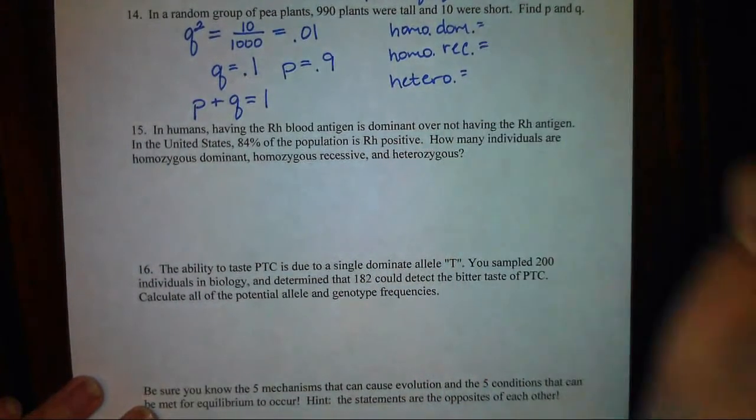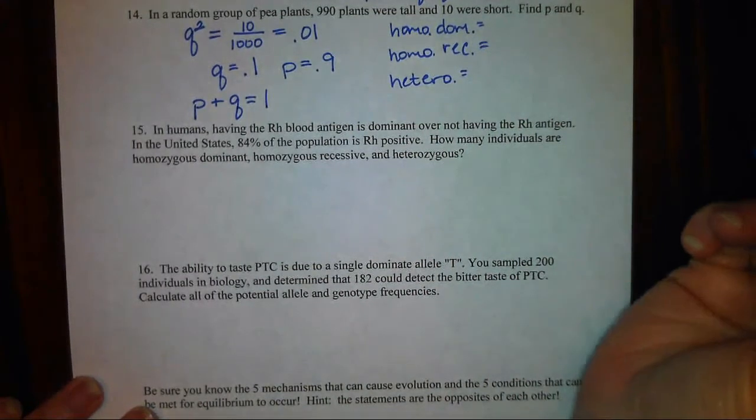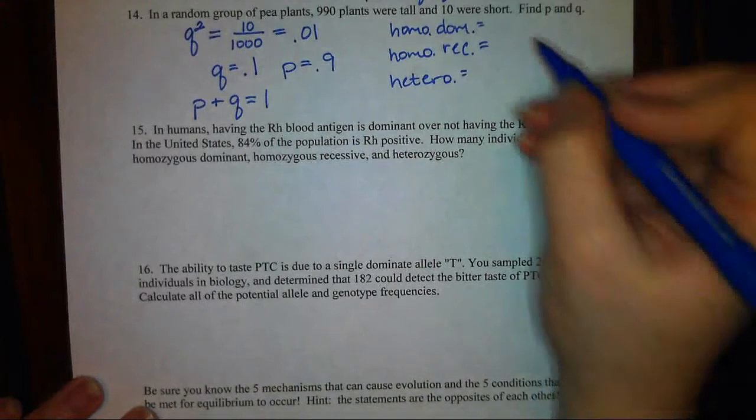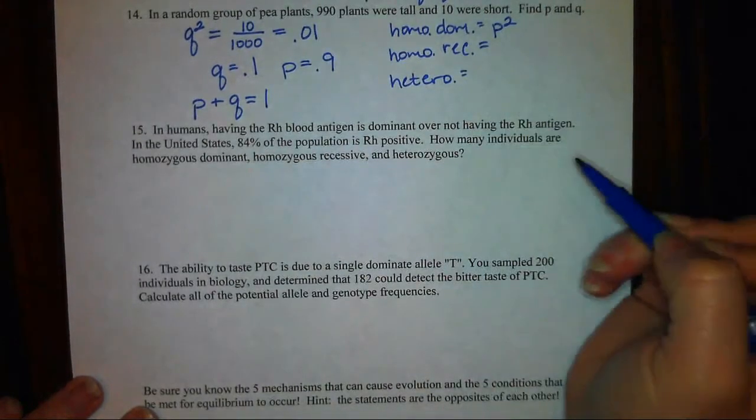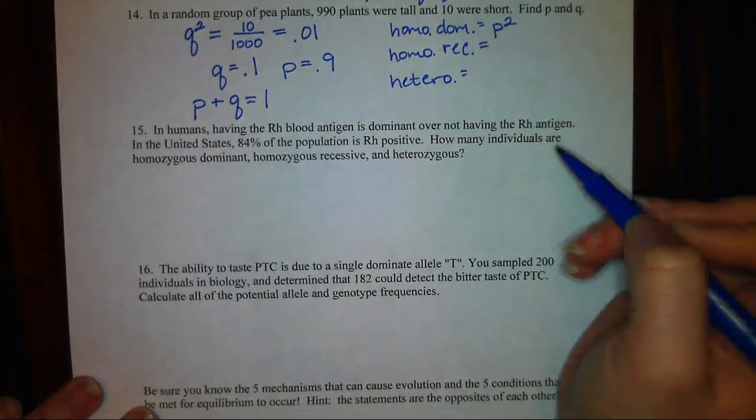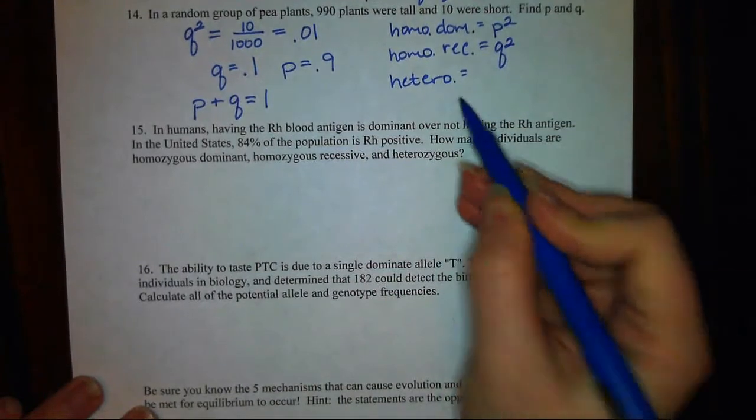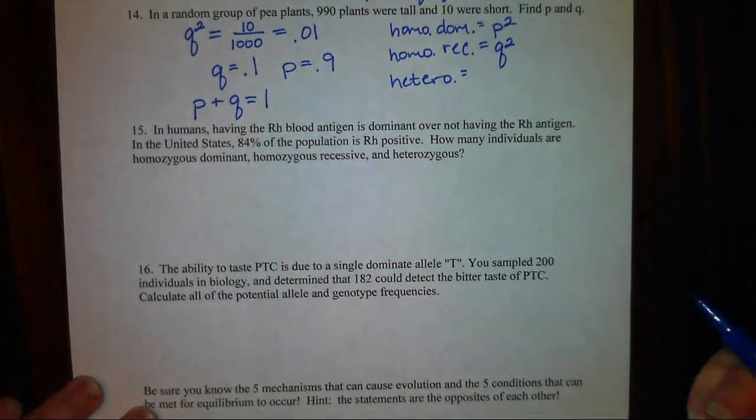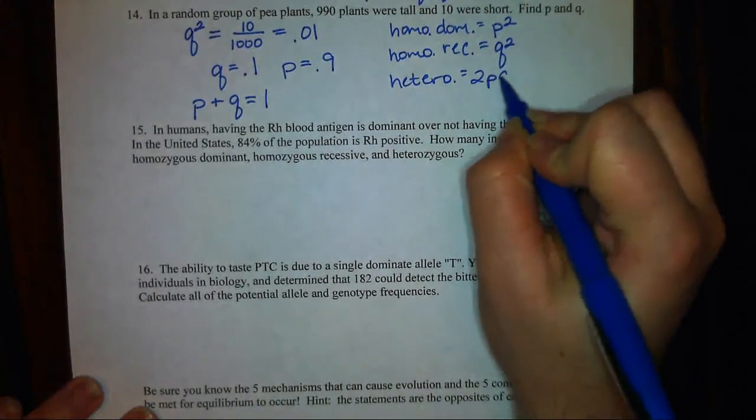Thinking back to your alleles, the term that represented the homozygous dominant portion of our population was P squared. The term that represented the homozygous recessive portion of our population was Q squared. And the term that represented the heterozygous portion of our population was 2PQ.